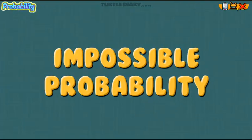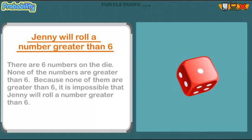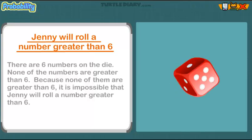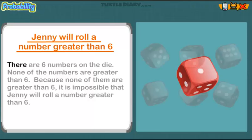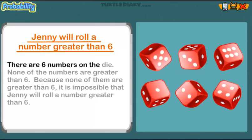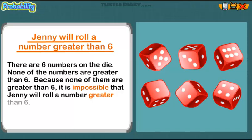Impossible probability. Jenny will roll a number greater than six. There are six numbers on the die. None of the numbers are greater than six. Because none of them are greater than six, it is IMPOSSIBLE that Jenny will roll a number greater than six.